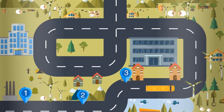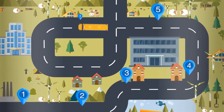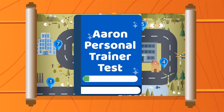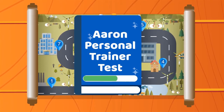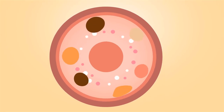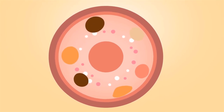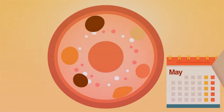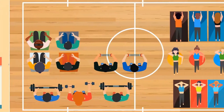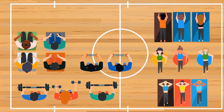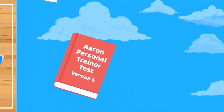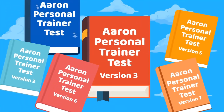Now Aaron has finished all the steps on the roadmap and developed his exquisite Aaron Personal Trainer Test. He's done, right? Well, not exactly. A test is like a living organism. It needs new items all the time to prevent cheating, and it may become outdated in terms of its ability to qualify candidates. Ultimately, the field of personal training is evolving, and the persons who need personal training are changing. The test also must be evolving and changing.